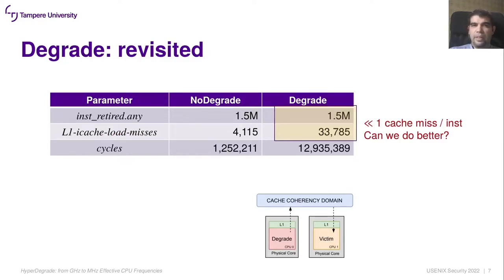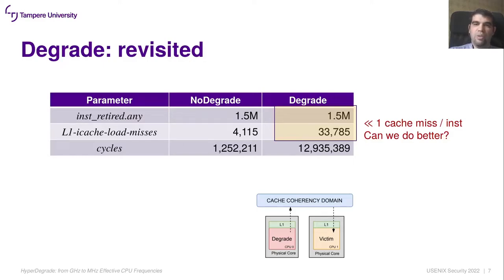We will start by revisiting the original performance degradation attack, labeled as degrade. For this task, we designed an experiment where we executed about 1 million instructions and collected the average of some CPU metrics using the Linux Perf tool. We compared the baseline approach — no degrade — with the original degrade. As expected, we see a considerable increase in the number of cache misses, resulting in about 12 times more CPU cycles. However, we noted that the cache miss to instruction ratio is below one, so it is very natural to ask: can we do better?